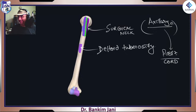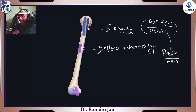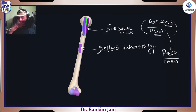The axillary nerve is from the posterior cord. Now it is associated with which artery? As it was crossing through the quadrangular space and going posteriorly, it was associated with the posterior circumflex humeral artery — not the axillary artery. Take care — it is the posterior circumflex humeral artery. There are two: posterior circumflex humeral artery and anterior circumflex humeral artery, and they are branches of the third part of the axillary artery.